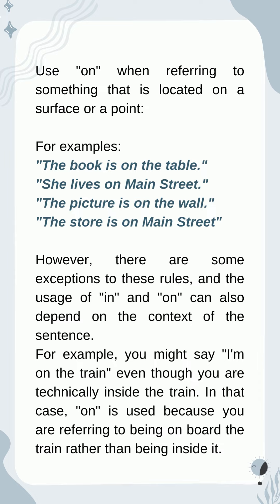However, there are some exceptions to these rules, and the usage of 'in' and 'on' can also depend on the context of the sentence. For example, you might say 'I'm on the train' even though you are technically inside the train. In that case, 'on' is used because you are referring to being on board the train rather than being inside it.